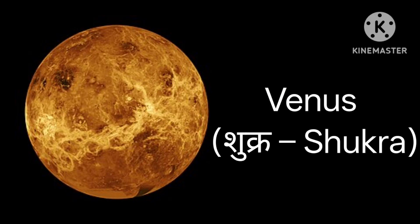After Mercury comes Venus. Venus is known as Shukra Graha in Hindi.